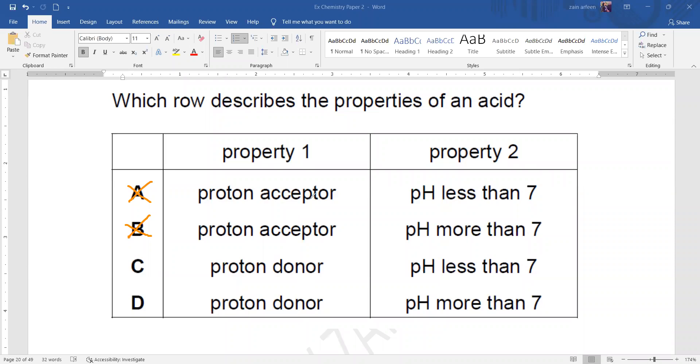And what about the pH of acids? Acids have a pH less than 7. If it was an alkali, pH more than 7. So pH less than 7.